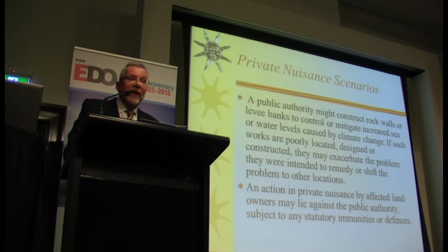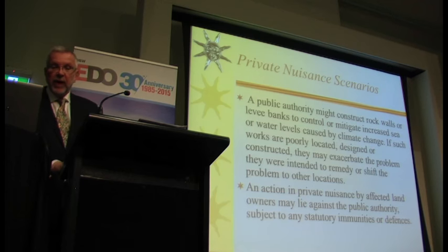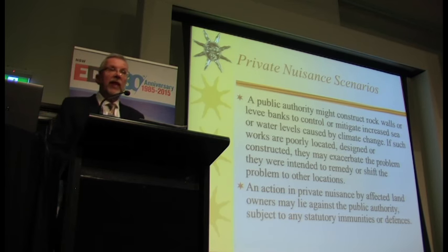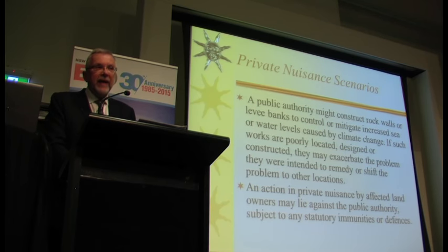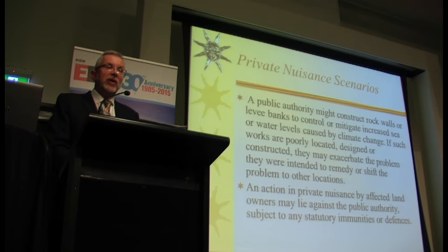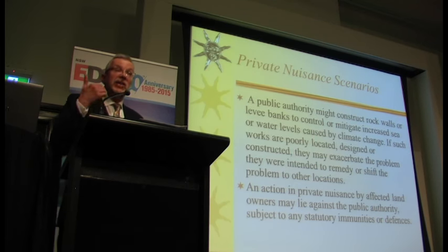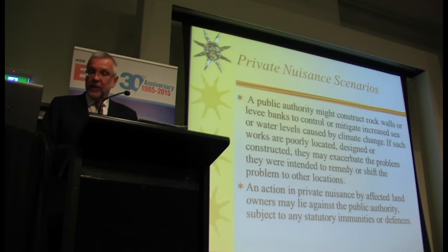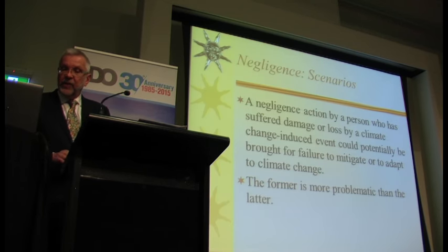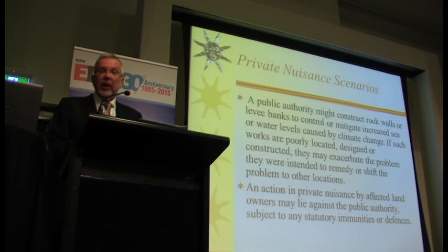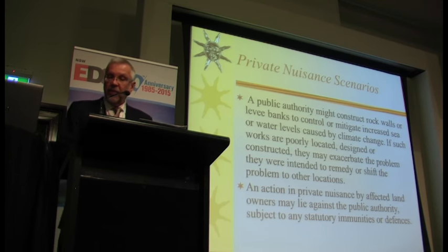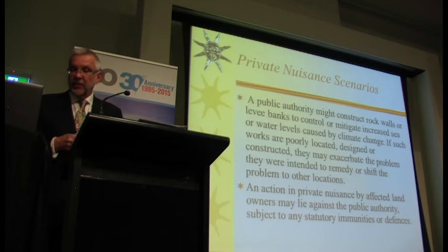What about private nuisance? We haven't had too many cases, but essentially where we think the actions will be is not the failure to mitigate, but rather where action taken to try to do something was unsuccessful and caused harm. For example, if certain works were poorly located, designed, or constructed, that actually may make the problem worse rather than better, and then people may be able to take action in private nuisance.